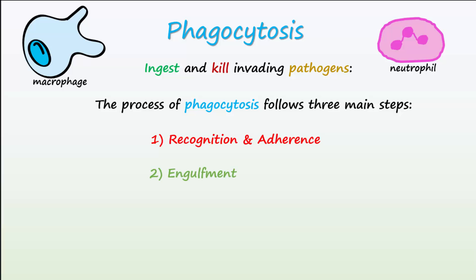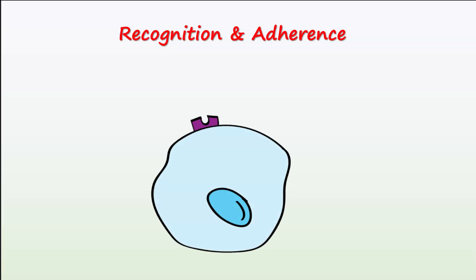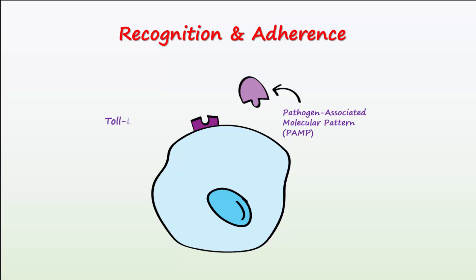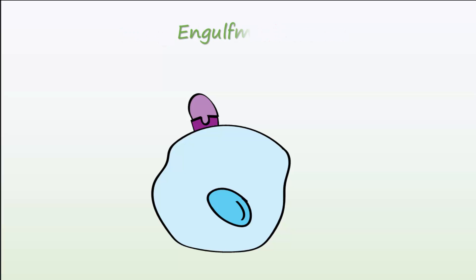Direct recognition and adherence occur when a pathogen-associated molecular pattern, or PAMP, expressed by a microbe binds with a toll-like receptor on the membrane of a phagocyte.